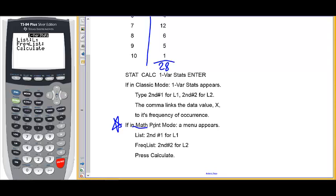If we're in math print mode, a menu appears. For the list, we simply put where the data values are. That's list 1, the shoe sizes. The frequency list is L2. So, second L2. Second number 2 for L2. And then simply go to calculate.